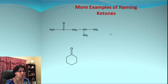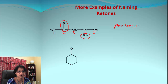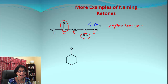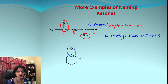In this example, the ketone carbon should get the lowest number. At the junction, choose the direction giving the longest chain. The parent chain is pentane and the ketone is at position two — giving pentanone. There is also a methyl group at position four, so the full name is 4-methylpentan-2-one, which we can also write as 4-methyl-2-pentanone.